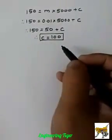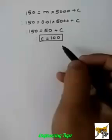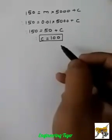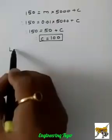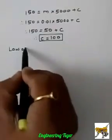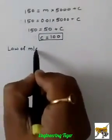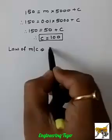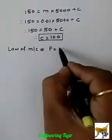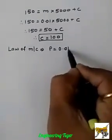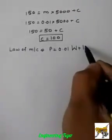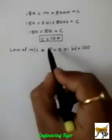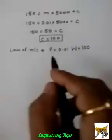Now we have calculated m and C values. Put these values in the general equation of law of machine. The equation becomes P equals 0.01W plus 100. This is the general law of machine for this machine.